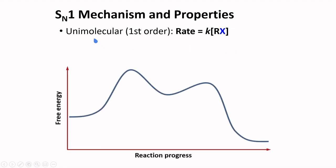Because the breaking of the C-X bond is the slow step, our rate of reaction is dependent only on the concentration of the alkyl halide, the reactant in that step. And this is the basis for SN1. SN1 is a unimolecular nucleophilic substitution.